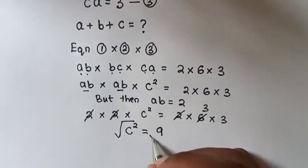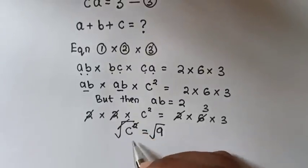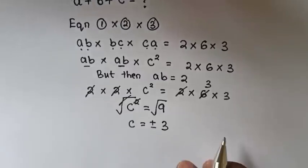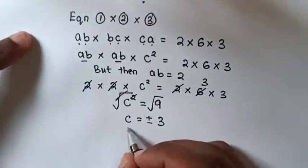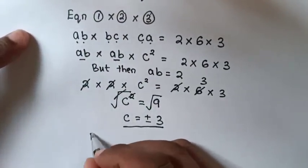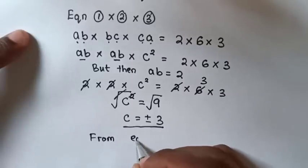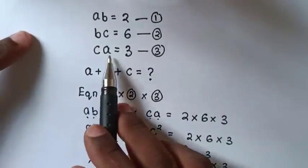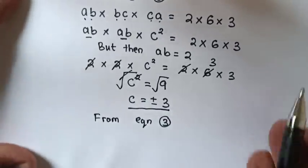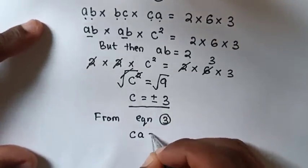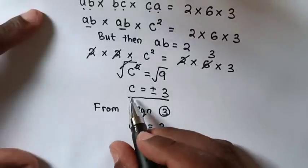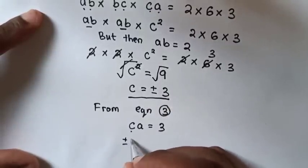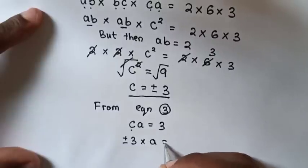We apply square root on both sides, so the square root cancels the square, and C equals plus or minus 3. Now we already have the value of C. From equation 3, CA equals 3, and we already know C is plus or minus 3, so we substitute: plus or minus 3 times A equals 3.